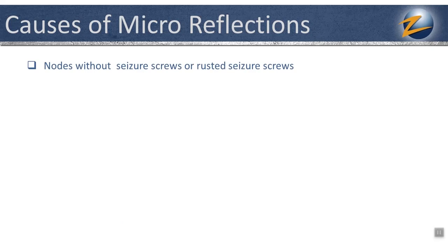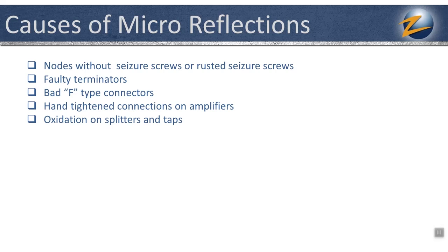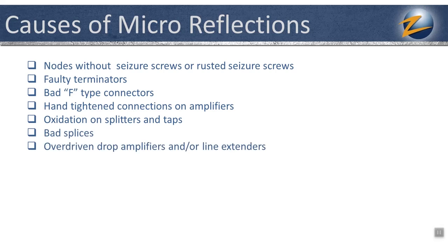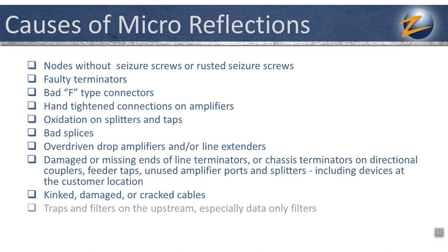Some common sources of microreflections in the HFC plant are nodes without seizure screws or rusted seizure screws, faulty terminators, bad F connectors, hand-tightened connections on amplifiers, oxidation on splitters and taps, bad splices, overdriven drop amplifiers or line extenders, damaged or missing ends on line terminators or chassis terminators on directional couplers, feeder taps, unused amplifier ports and splitters — including devices at the customer location — kinked, damaged or cracked cables, and traps and filters on the upstream, especially data-only filters.